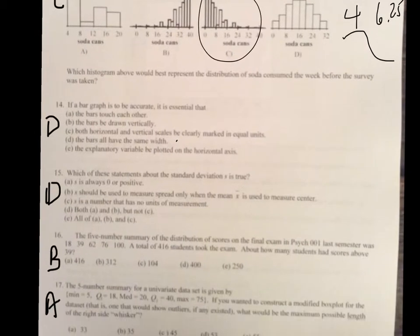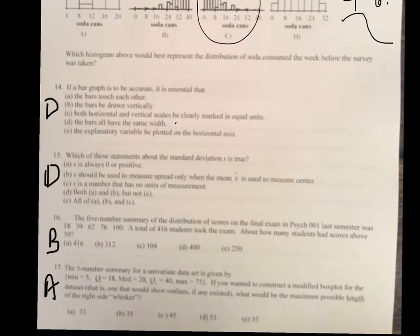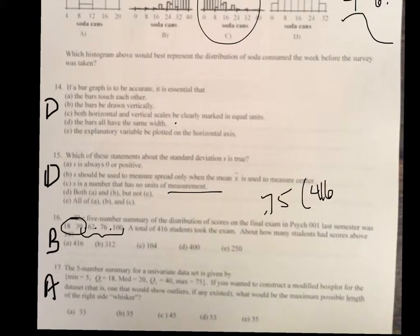On number 15, which of these statements about the standard deviation is true? Well, all of them are true except for C, because S is a number that has no unit of measurements. Standard deviation does have the unit of measurement. Now, on 16, it says about how many students score above 39. Well, remember, these are called quarters. So, that's 25%, 25%, 25%, and 25%. Well, if we're using 25%, that means this part is 75%, and 75% times 0.75 times a total of 416 would give you 312.